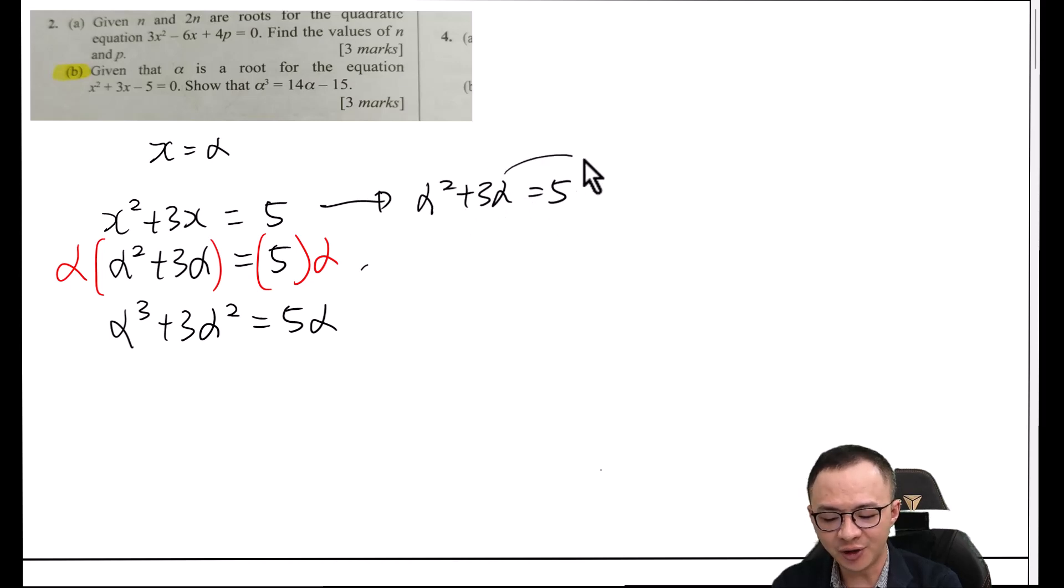So if I move my 3 alpha to the other side, I should get alpha squared equals 5 minus 3 alpha. Why is this important? Because I see the equation they asked us to show, it doesn't have alpha squared. So this is the reason why I want to substitute my alpha squared into it to get rid of the alpha squared.